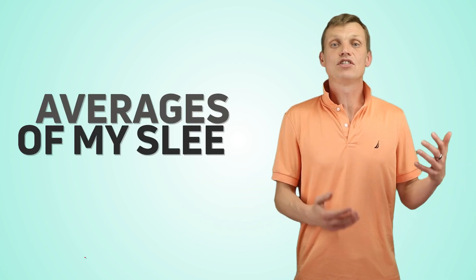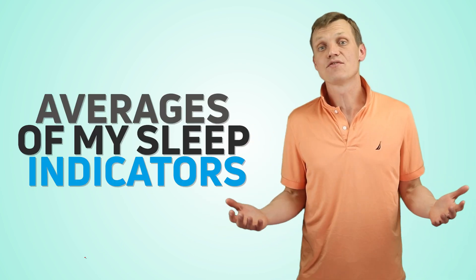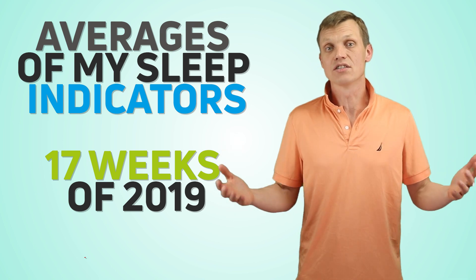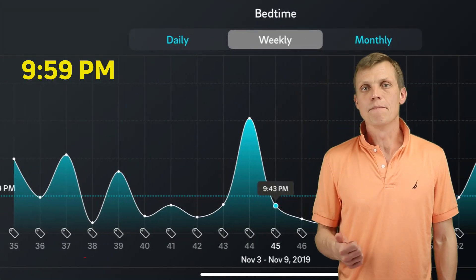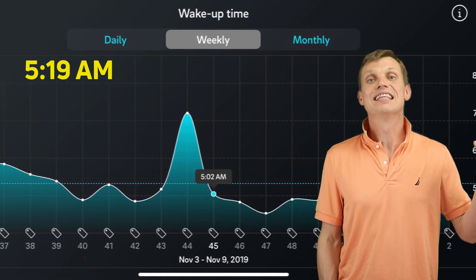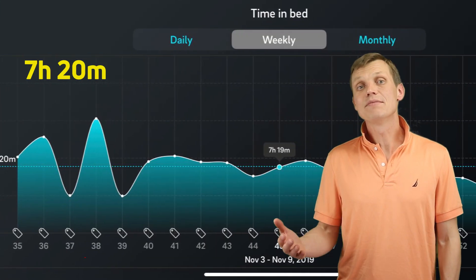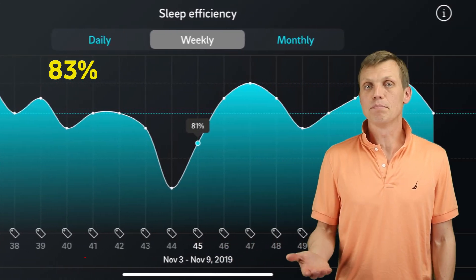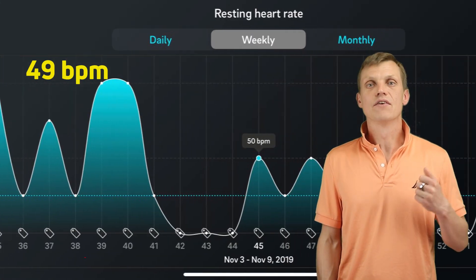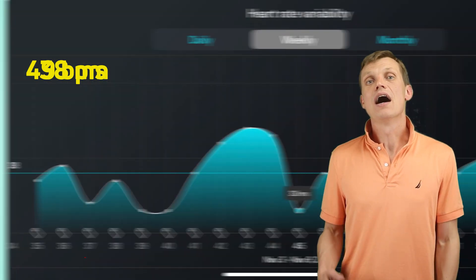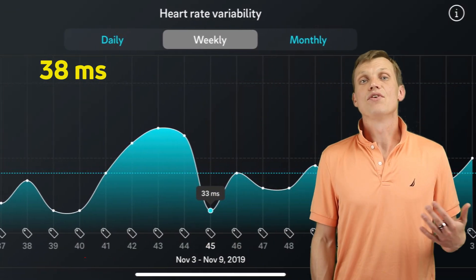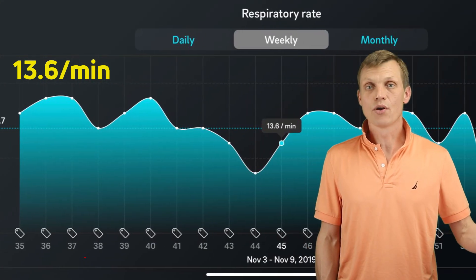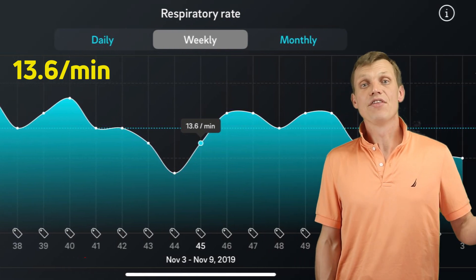Let's look at the data from multiple nights. This is the averages of my sleep indicators and weekly graphs for the last 17 weeks of 2019. Bedtime – 9:59 PM. Wake up time – 5:19 AM. Time in bed – 7 hours 20 minutes. Sleep efficiency – 83%. Resting heart rate – 49 beats per minute. Heart rate variability – 38 milliseconds. Respiratory rate – 13.7 breaths per minute.